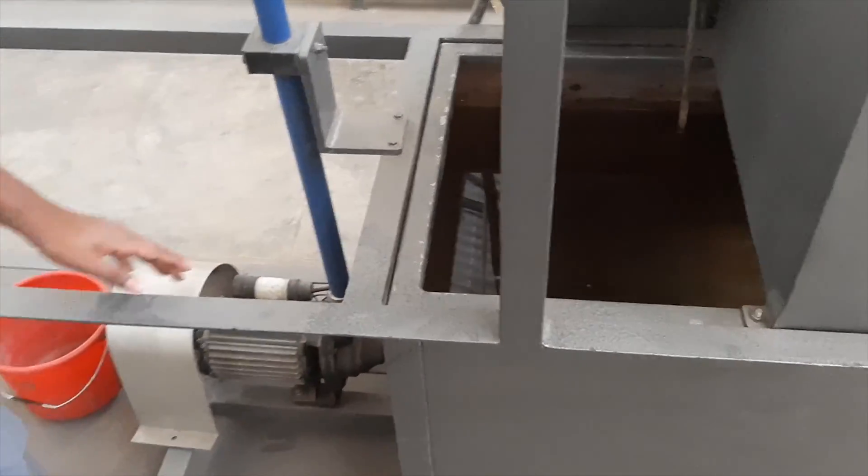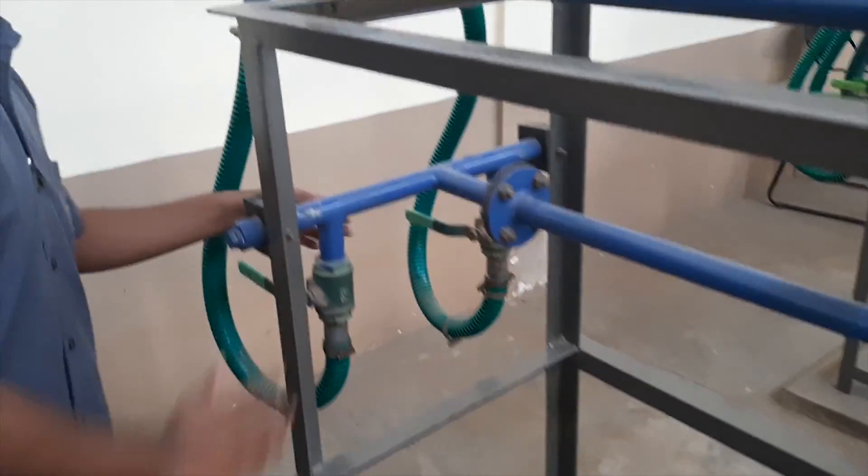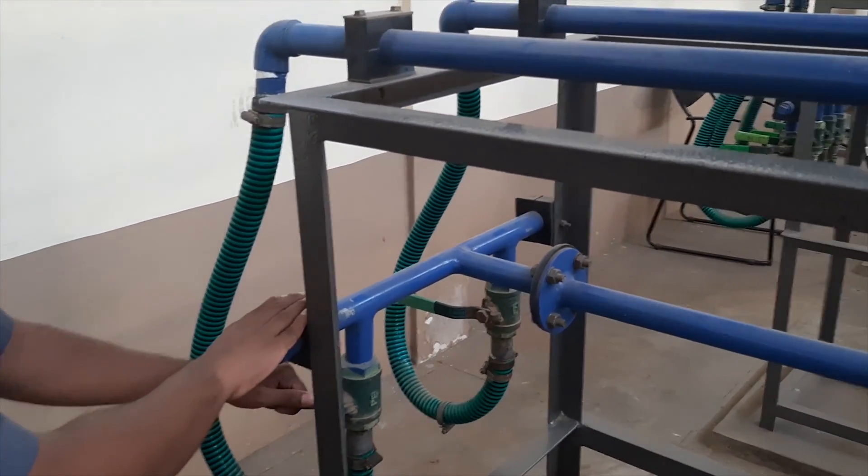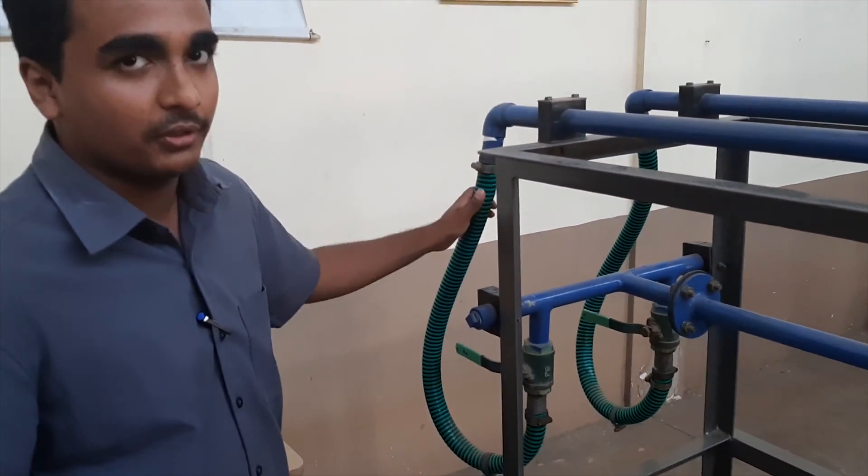This is the reservoir tank from which water is pumped with the help of a DC motor. This is the connection valve where water flows to both orifice and venturi meter. We are going to perform the experiment on orifice meter, hence the valve will be opened in the experiment.